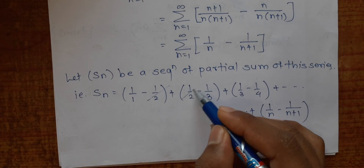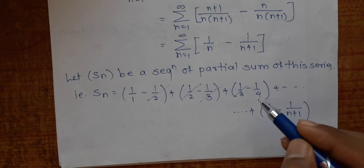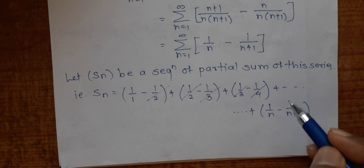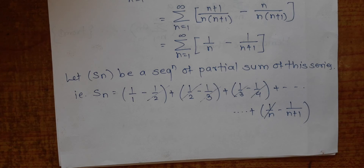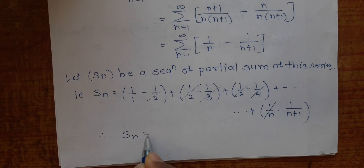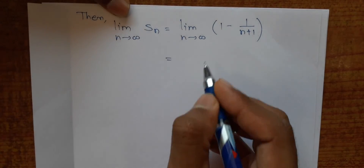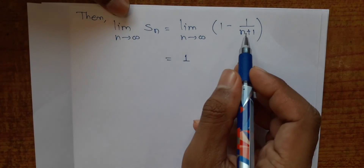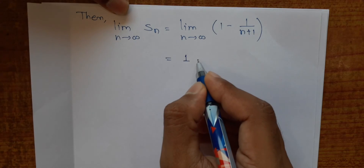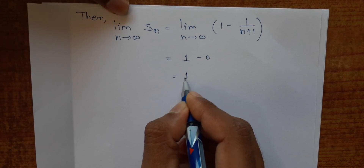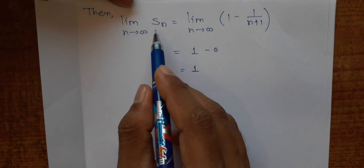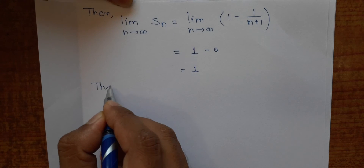We can cancel terms: -1/2 + 1/2 cancel, -1/3 + 1/3 cancel, and so on. Only the first and last terms remain, so Sₙ = 1 - 1/(n+1). Taking the limit of both sides as n→∞: 1 is constant, and 1/(n+1) → 0 as n→∞, so the limit is 1 - 0 = 1. Therefore, the sequence Sₙ converges to 1.